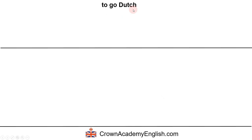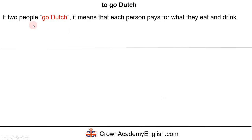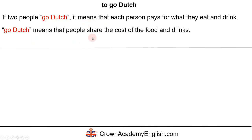The next expression is 'to go Dutch.' This is a very interesting and unusual expression, but it describes a very common situation. If two people go Dutch, it means that each person pays for what they eat and drink. We use this expression when eating in a restaurant or drinking in a bar and we're not sure who is going to pay the bill.